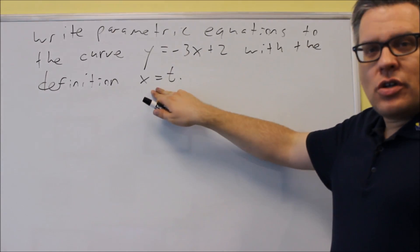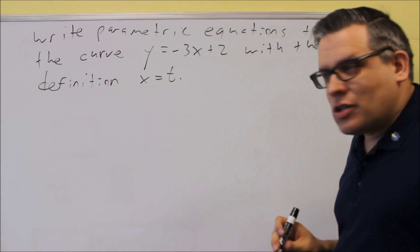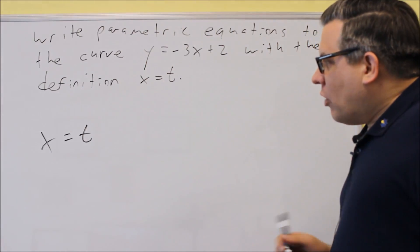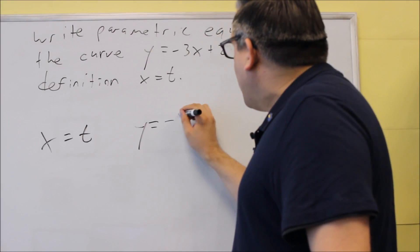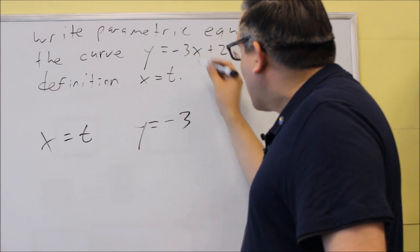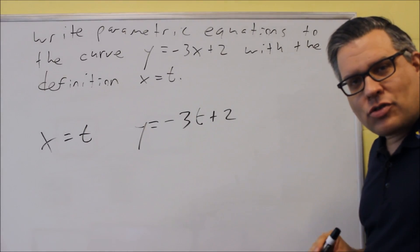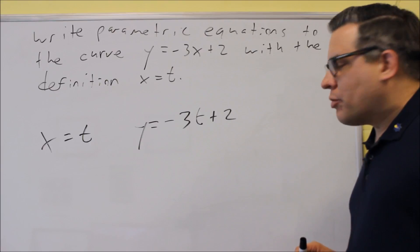Here's the first parametric equation. They already give us that x equals t. If I want to find the other one, all I have to do is substitute t for x. That's all we have to do for this one. x = t and y = -3t + 2. Let's look at a couple others.